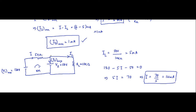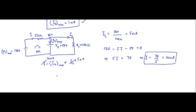Applying KCL at the node: I equals IZ_max plus IL. With I equal to 14 milliampere and IL equal to 5 milliampere, the maximum Zener current IZ_max equals 14 minus 5, which is 9 milliampere.